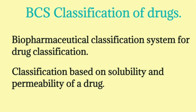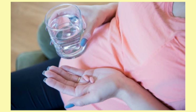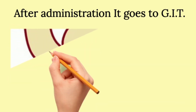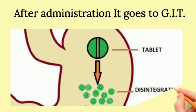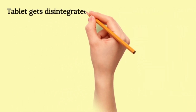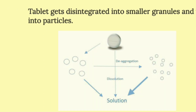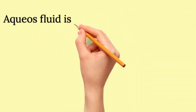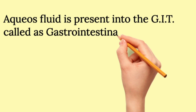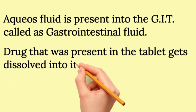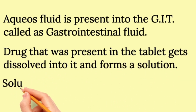Before moving to the actual classification, let us first see what happens after you take a drug by the oral route — for example, a tablet. After administration, it goes into the gastrointestinal tract, where it gets disintegrated — meaning the tablet divides into small pieces and particles. The gastrointestinal tract contains a fluid, which is aqueous in nature, and the drug present in the tablet dissolves into that fluid, forming a solution.